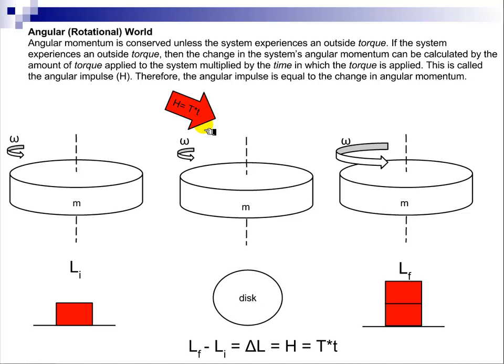Now, if it was just an outside force, that wouldn't necessarily change the angular momentum. It's got to be an outside torque. So our difference in our angular momentum, in this case, is what is called the angular impulse.